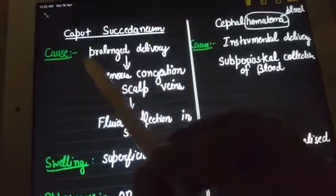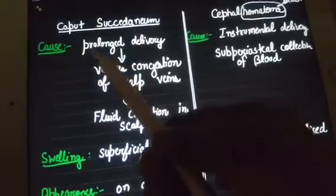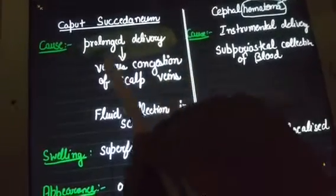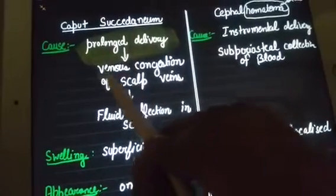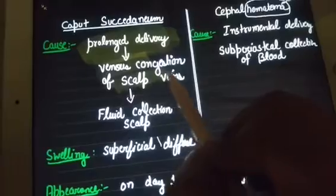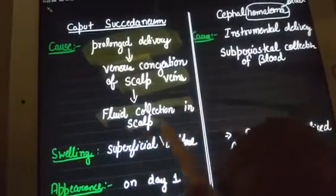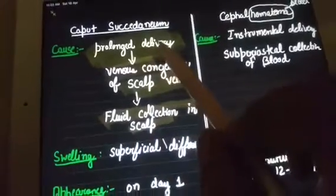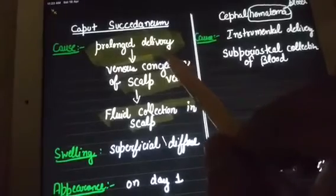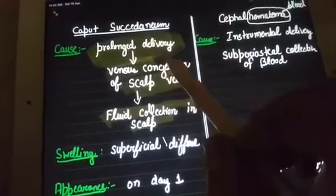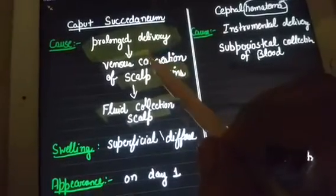Caput succedaneum usually happens during prolonged delivery. There is venous congestion of the scalp veins which leads to fluid collection in the scalp. It usually happens when the head is coming out and is stuck outside while the body of the baby is still inside, which leads to transudation of fluid.